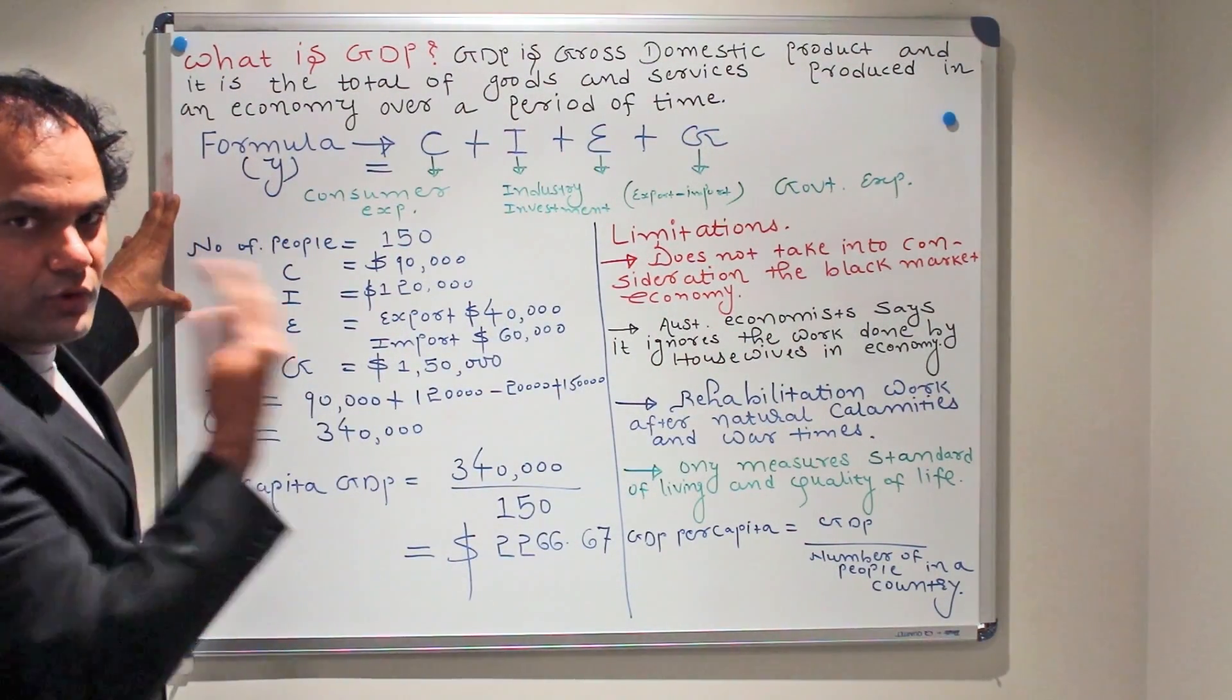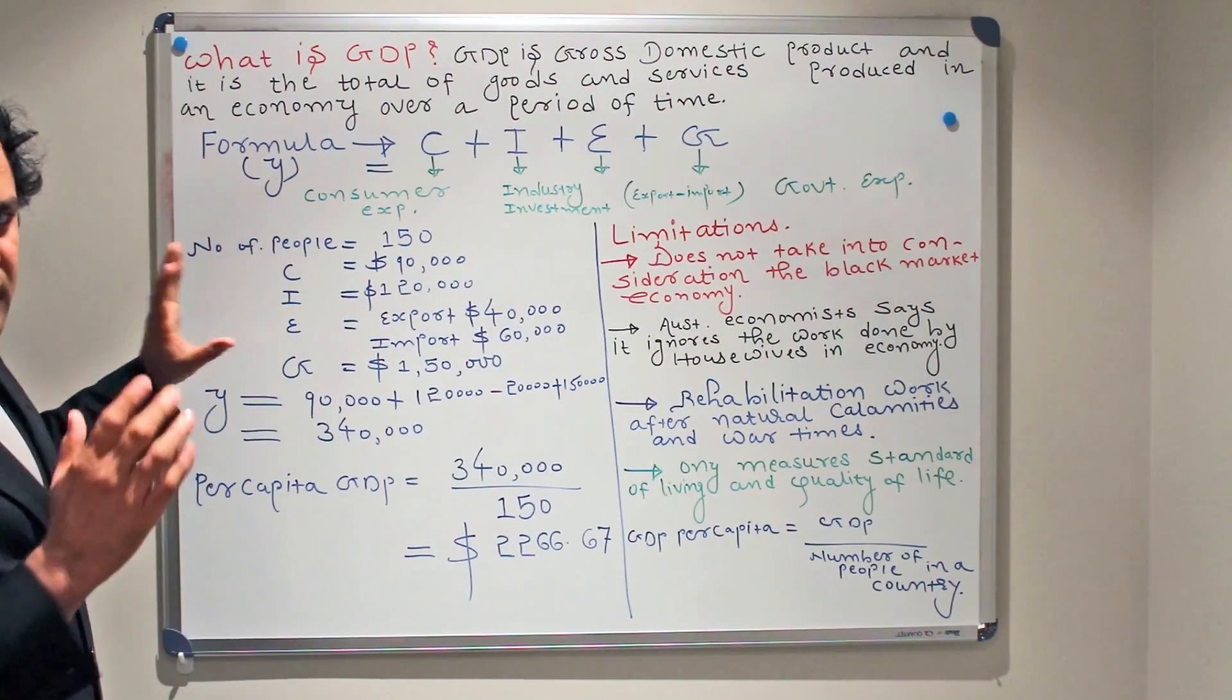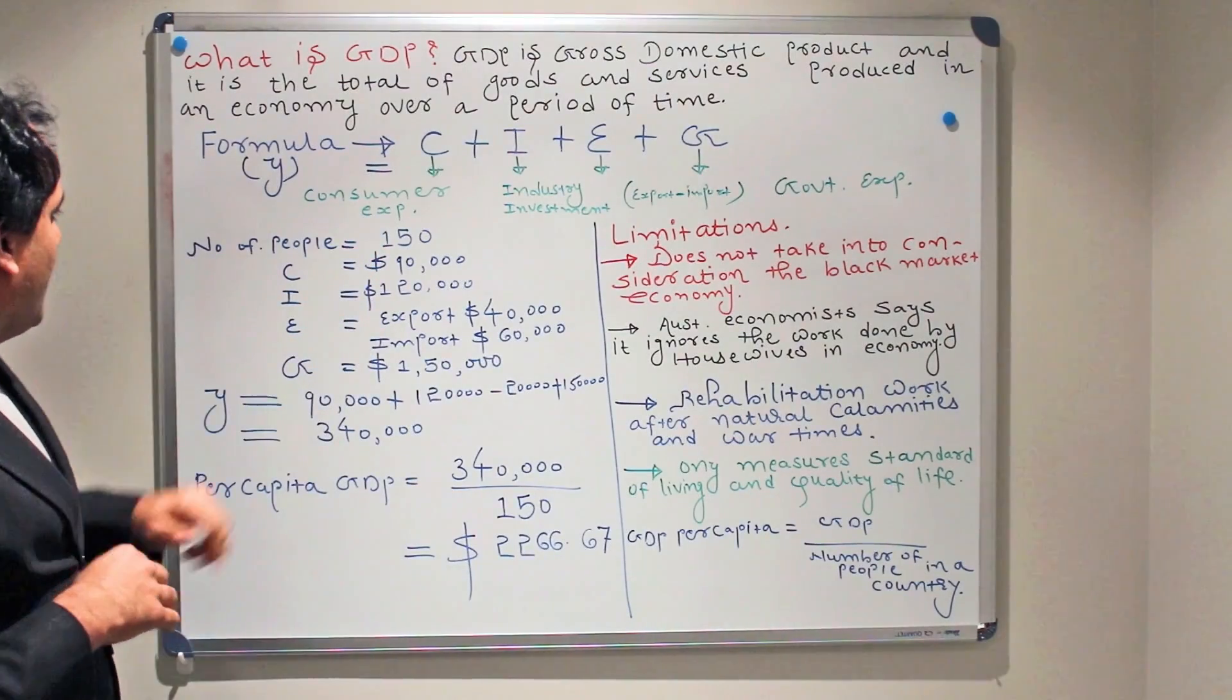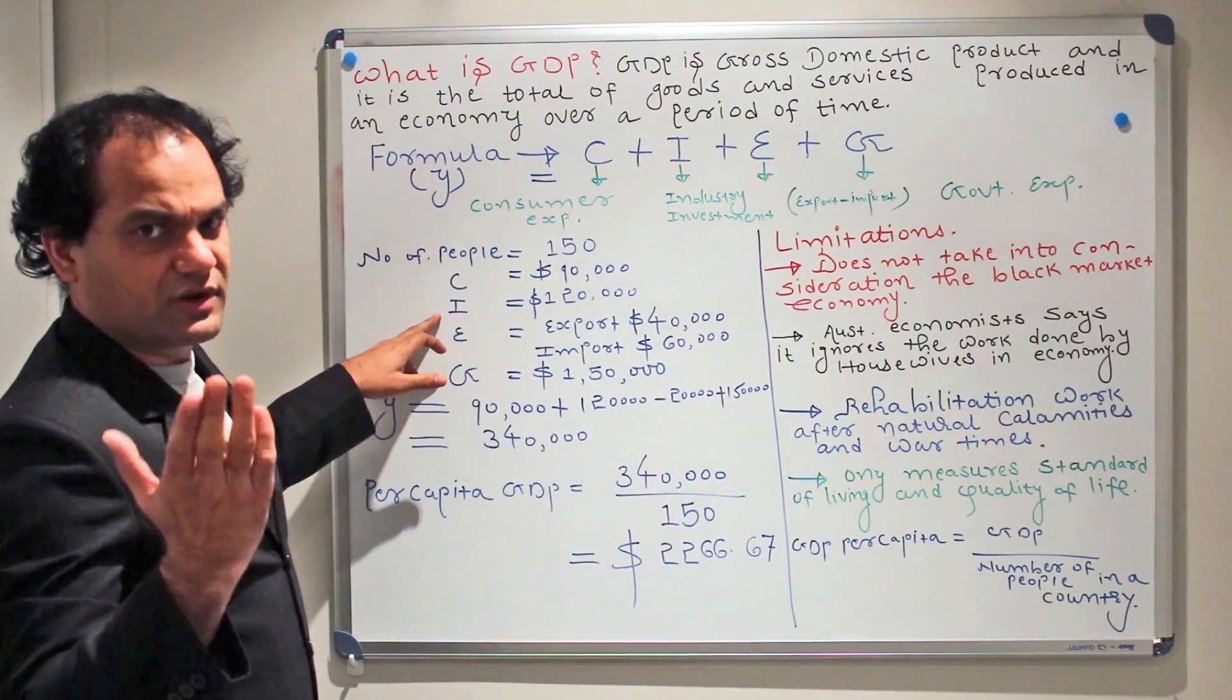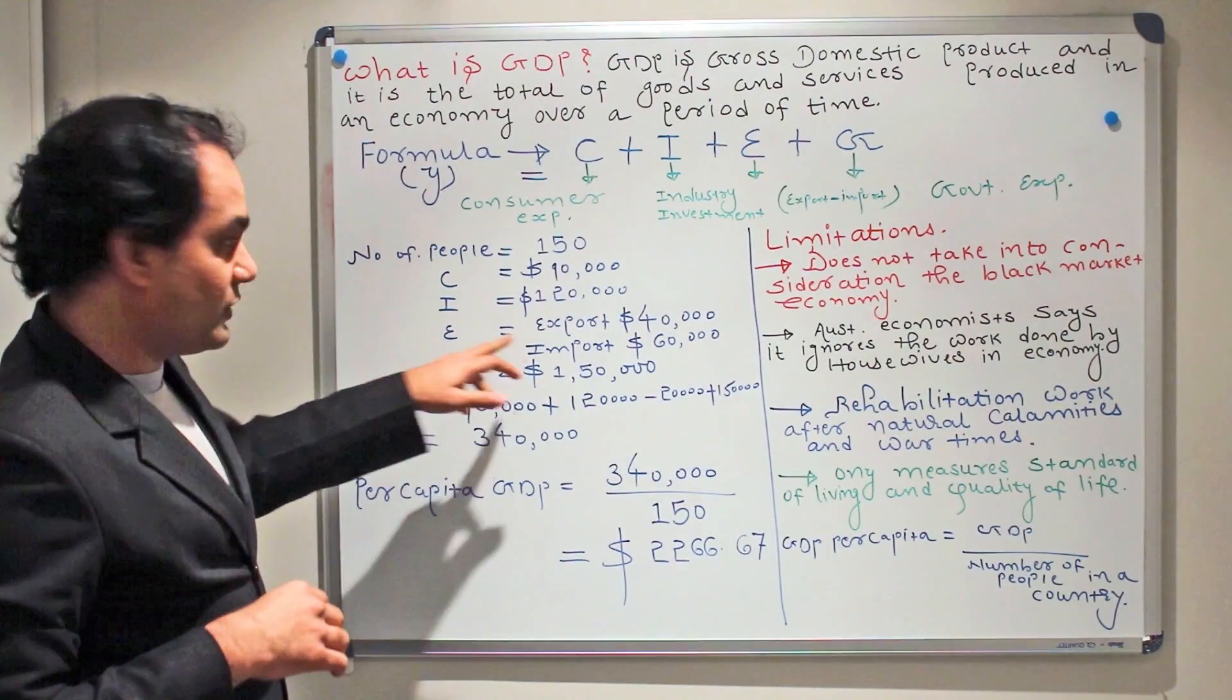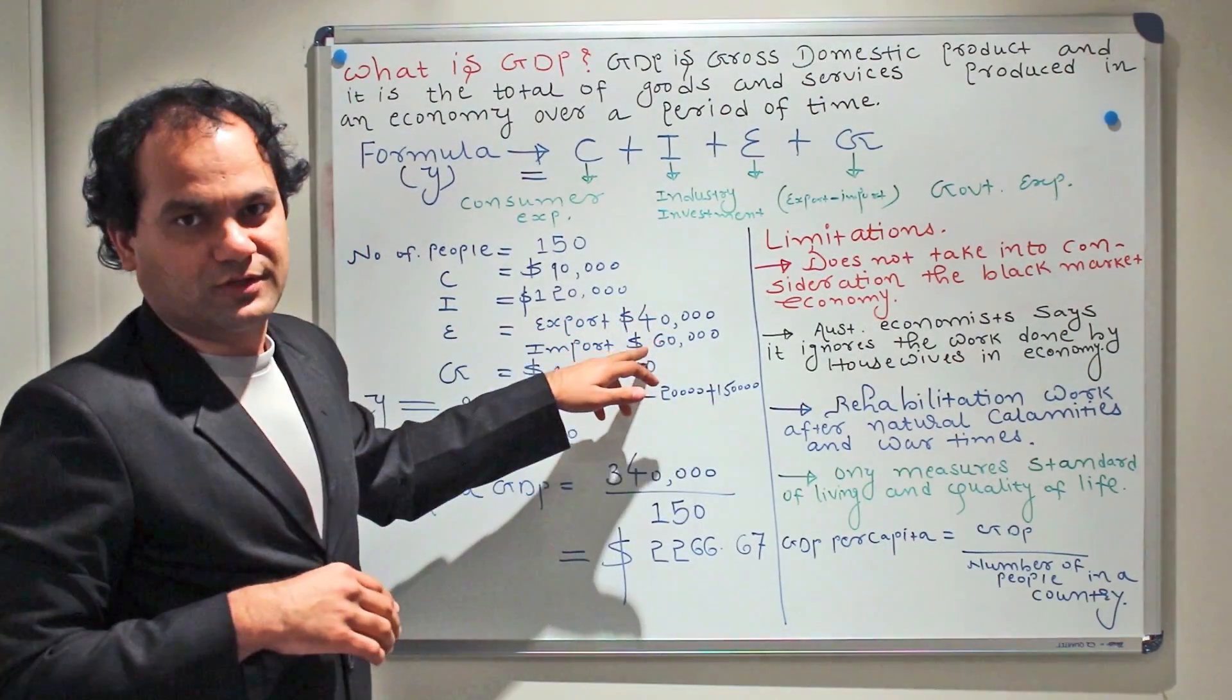Here is a quick example for you to figure out what GDP is and how it works. We have a hypothetical situation here. Number of people in an economy: 150. C, consumer expenditure, is $90,000. Investment, industry investment, is $120,000. And E is equal to export $40,000 and import $60,000.